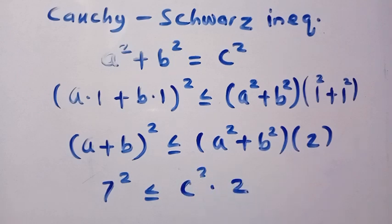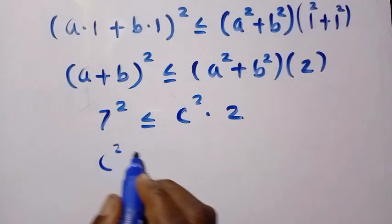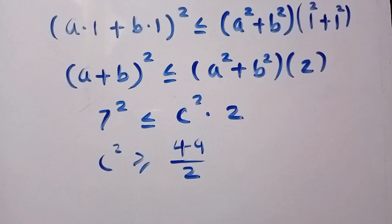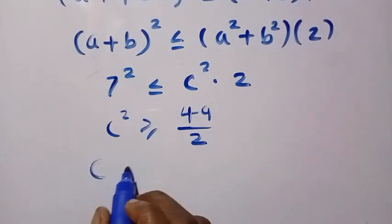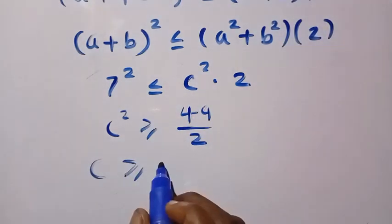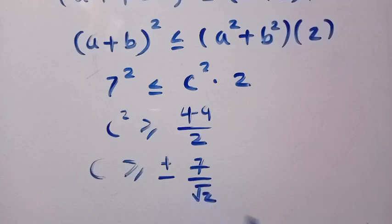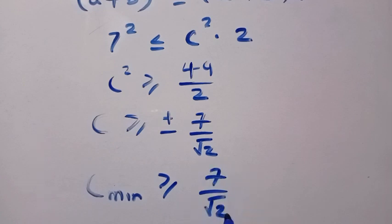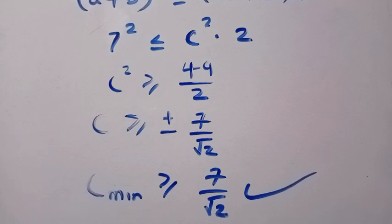Dividing both sides by 2, we get c² ≥ 49/2. Taking the square root of both sides gives c ≥ 7/√2. Since we are dealing with the minimum and c is positive, the minimum value of c is 7/√2. This confirms the result using the Cauchy-Schwarz inequality. Thanks for watching — don't forget to subscribe, and see you in the next class. Never stop learning!